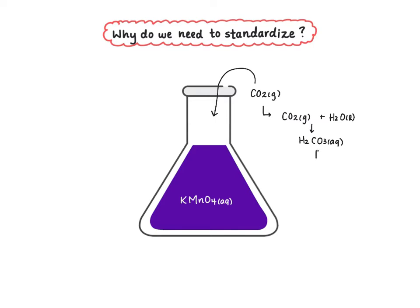This carbonic acid is going to release some hydrogen ions, and those hydrogen ions, when they work their way into our solution, are going to cause a spontaneous reaction with water. That means that over time the concentration of permanganate that we believe is in our solution is going to decrease, and so we need to figure out the actual concentration of permanganate right before we use it. To do that we often use something called a primary standard.